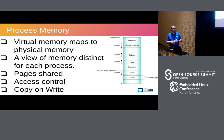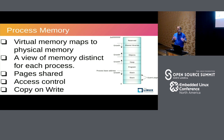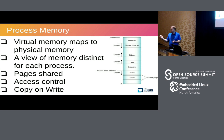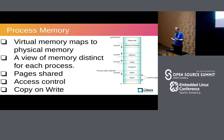Pages can be shared between processes. If two different processes use the same shared library or binary — glibc is an example used by almost every process — the system only needs one physical page frame with the content of the binary, and it can be linked to each of the different address spaces of the processes using it. This is another way to save memory and allow system optimization.